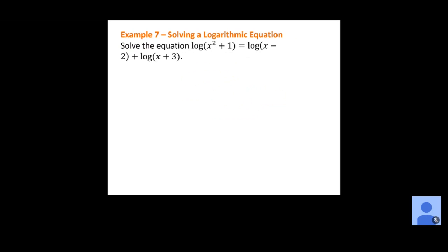Now we want to solve: log of x squared plus 1 equals log of x minus 2 plus log of x plus 3. The first thing I'll do is get all my logs together on each side. The log of x squared plus 1 is fine on the left. On the right, I'll use the property that allows combining addition of logarithms using multiplication, since both are common logs — this becomes a single logarithm of x minus 2 times x plus 3.